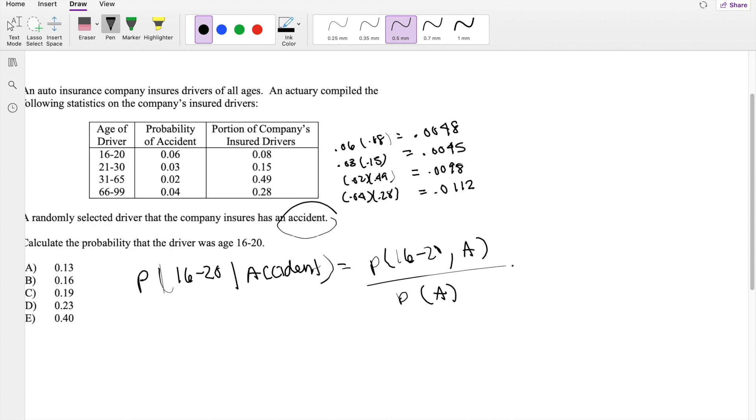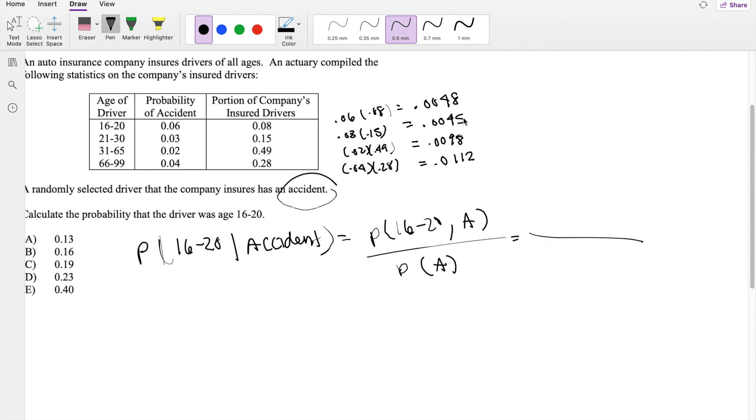So the denominator is just adding all this probability that they have an accident together. So it's going to be equal to 0.0048 plus 0.0045 plus 0.0098 plus 0.0112. And the numerator, probability that they're 16 to 20 and have an accident, well, that's the first one right here.